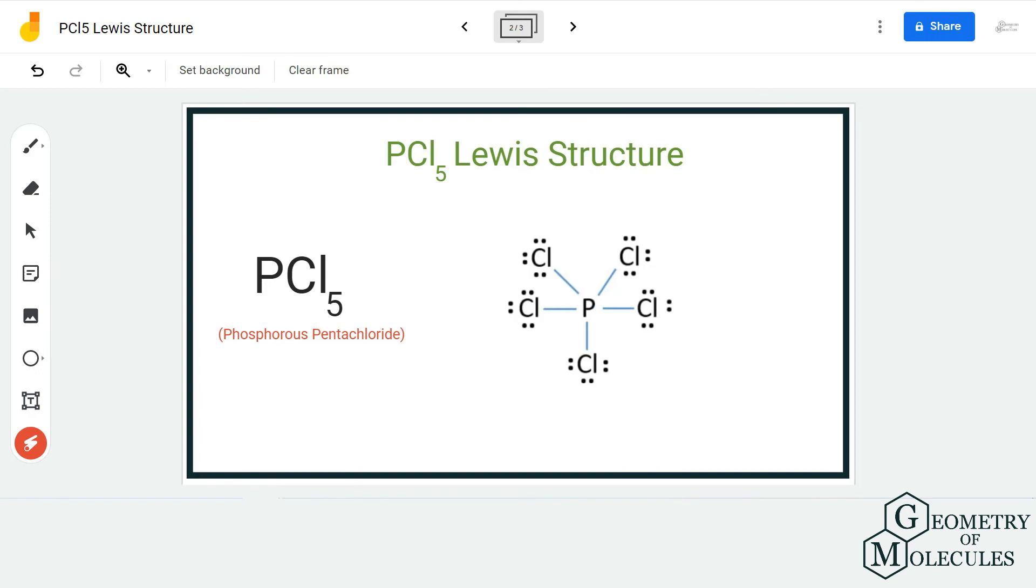in their outermost shell. But the phosphorus atom has 10 valence electrons in its outermost shell. You might wonder why it is not abiding by the octet rule, but phosphorus can have an expanded octet, which means it can hold more than eight valence electrons in its outermost shell. Hence, there are 10 valence